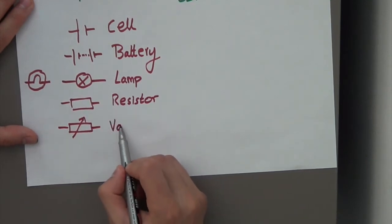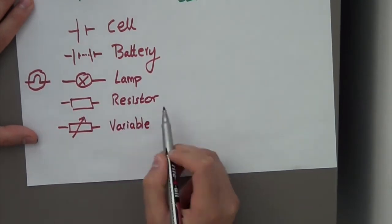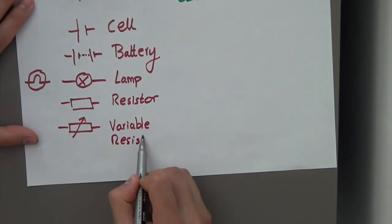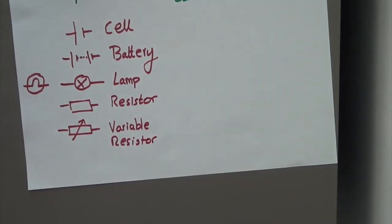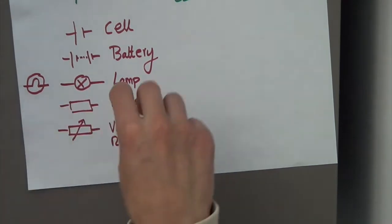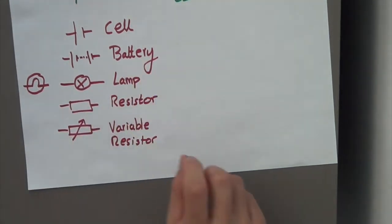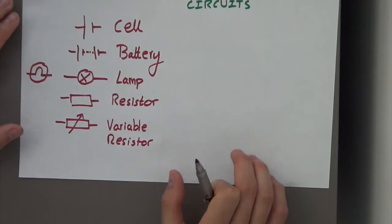This is a variable resistor. This is used in dimmer lights in rooms. Generally, in the form of a dial knob, you can alter the resistance that you want in the circuit. If it's connected to a lamp, you can change the dimness of a lamp.